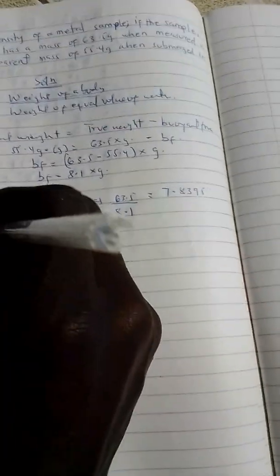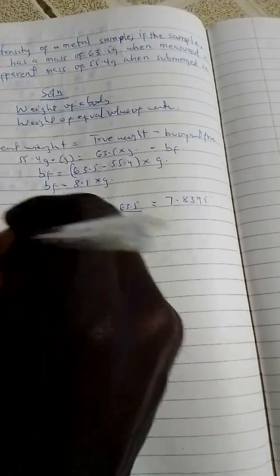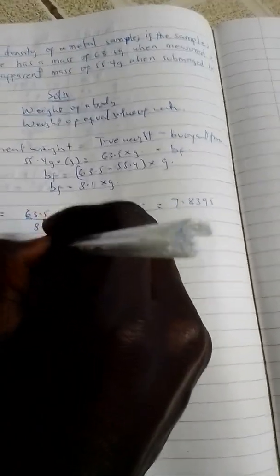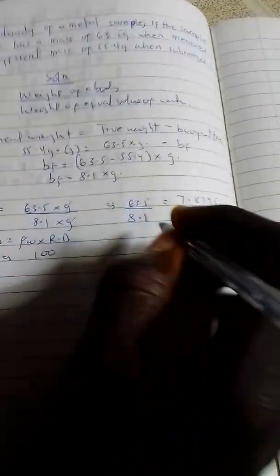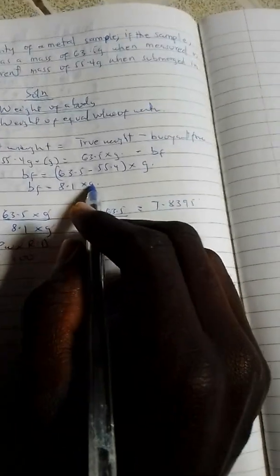We multiply the relative density by the density of water to give us the density. Density equals the density of water times the relative density. We are dealing with grams.